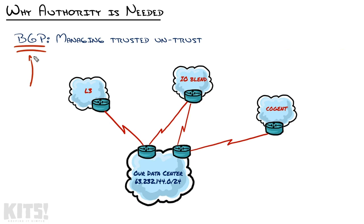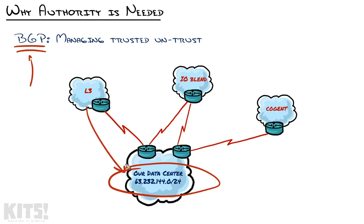Well, in the BGP world, you do. This block of IP addresses came to us from Level 3 — it was actually CenturyLink before they became Level 3. And I'm now wanting to advertise that out to Cogent and IO Blend and say I own those. Just like the car I purchased, I have to have some supporting documentation to prove it. If somebody thinks I'm stealing a car, I have to be able to say no, this is my car — let me show proof of registration. I have the authority to use this car.